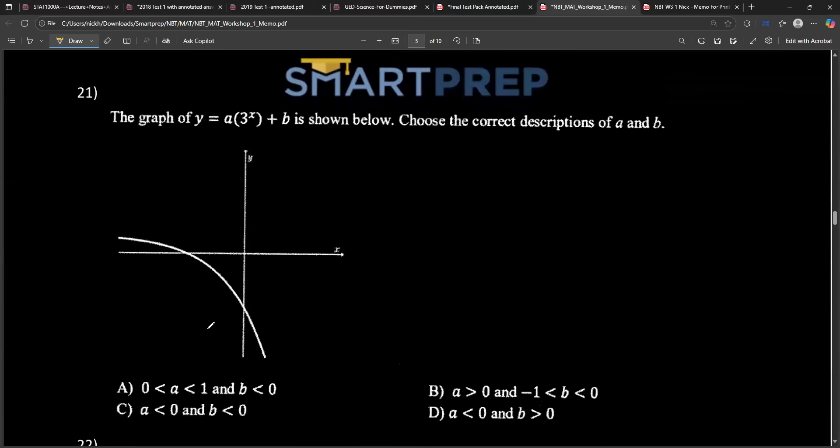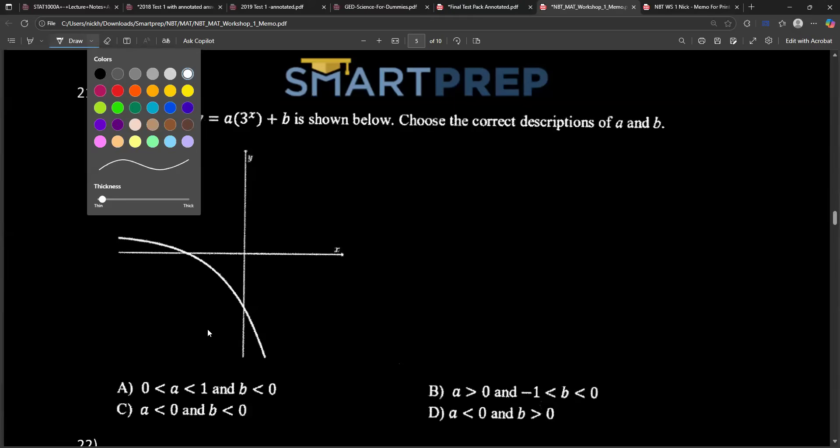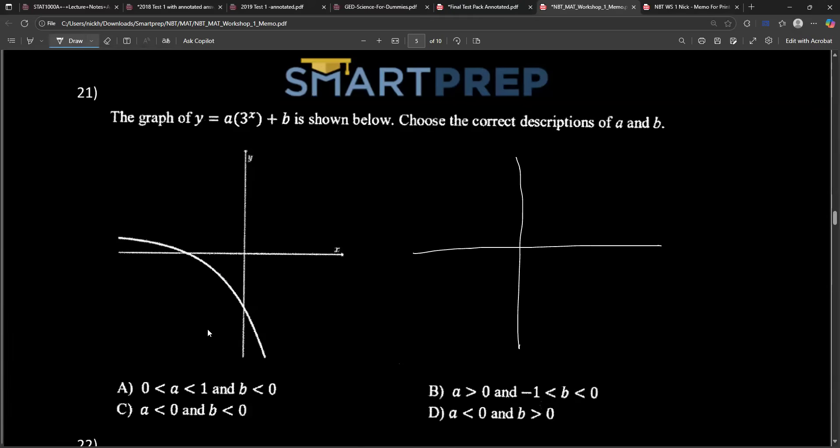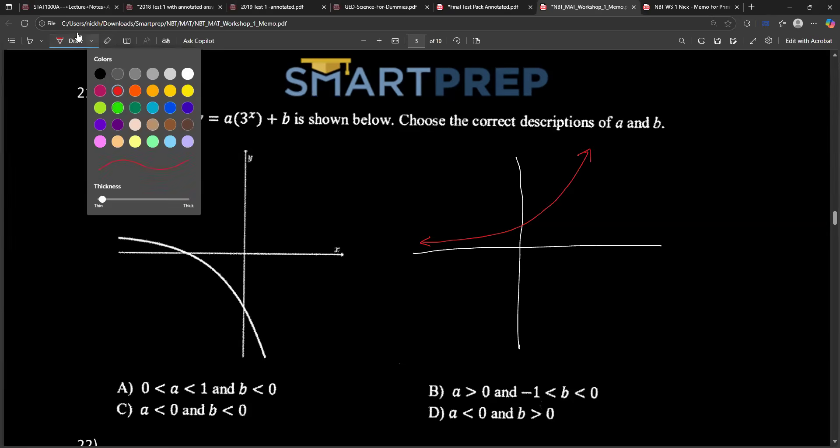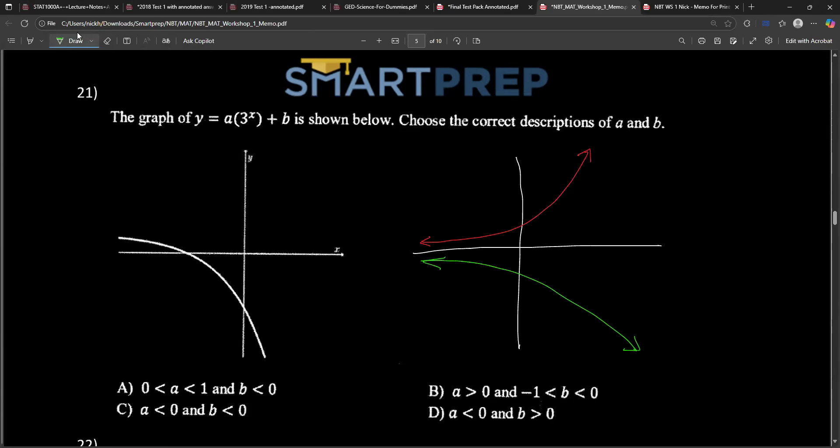Question 21. The graph of y = a(3ˣ) + b is shown below. Choose the correct description of a and b. When you see this, this is an exponential graph. I will again check out Nick Hiltzman YouTube, I will go over this with a bit more detail. For now I'm just going to draw the exponential graph. The exponential graph goes like this. If I make a negative, that is the same as making y negative.